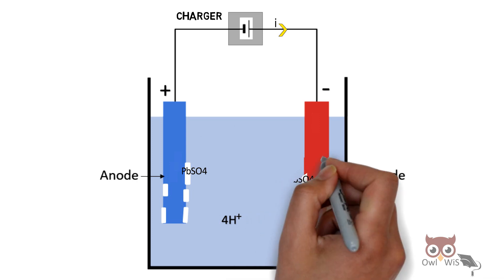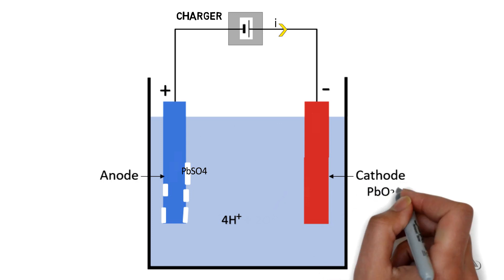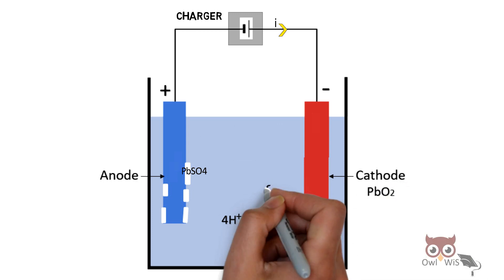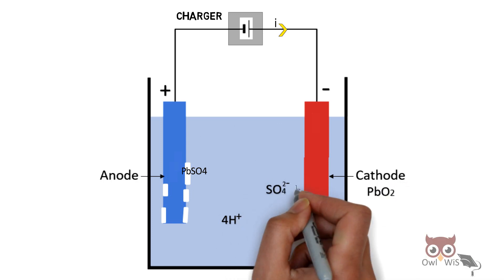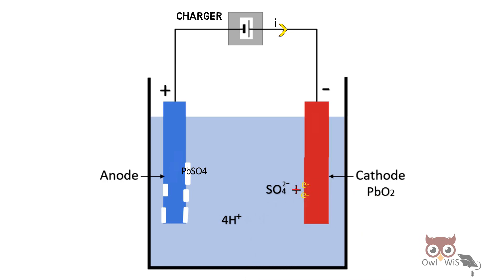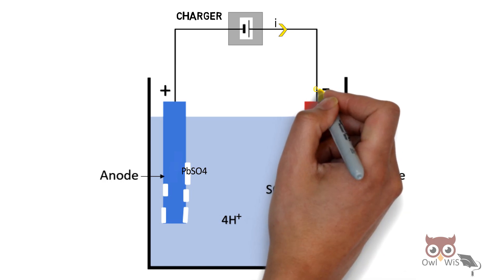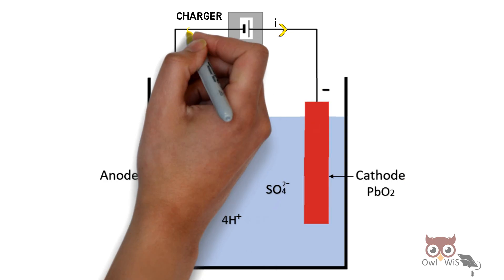The oxide ions react with the cathode to form lead peroxide, giving away sulfate and two electrons. These electrons then move towards the anode.